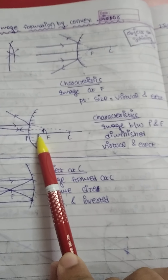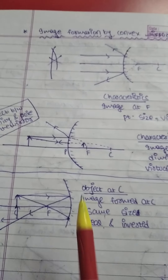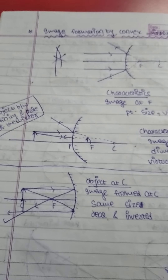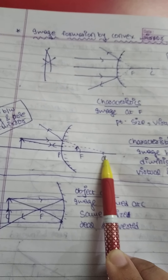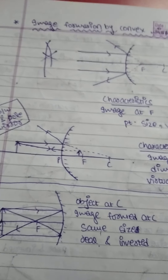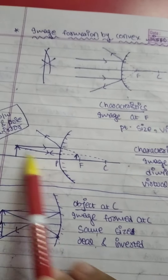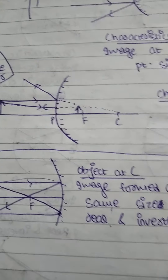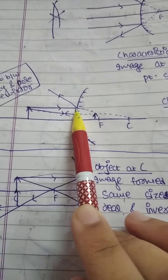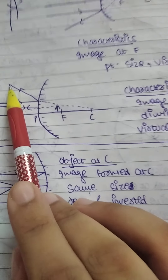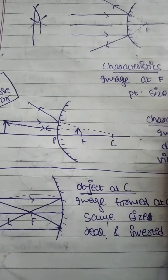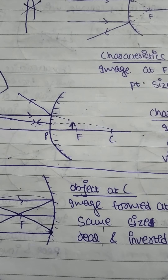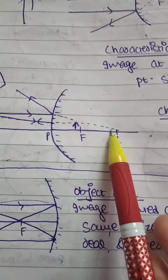For object between infinity and pole, we use the rule that if the light ray is from C it will be undeviated — it will not bend or reflect back. So the first ray is from C, and this ray has a backward extension. Then the light ray reflects back, and using these two rays we do the backward extension to find the image, which forms between F and the pole.